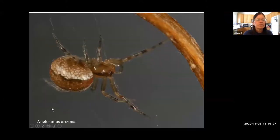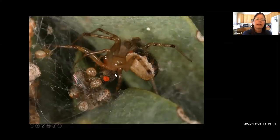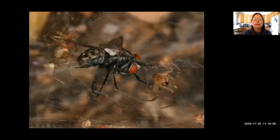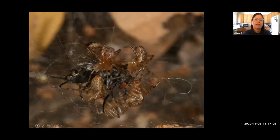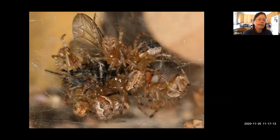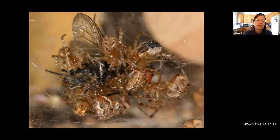Here's another example of social behavior: Anelosimus arizonensis, a tiny relative of the black widow. The mother feeds fruit flies to her babies, and as the babies grow older and can capture prey themselves, when one detects prey it signals siblings through the web to help capture it. They cooperatively kill the prey and all share in it. These spiders are considered subsocial because they stay in the web only until nearly mature, then disperse, with colonies of only about 30 spiders.